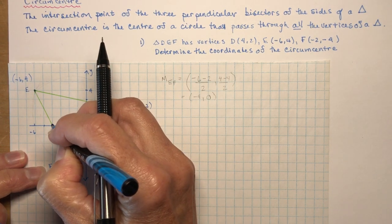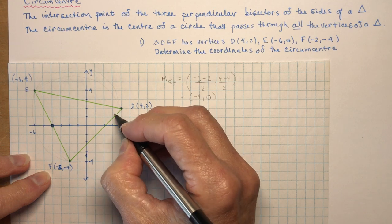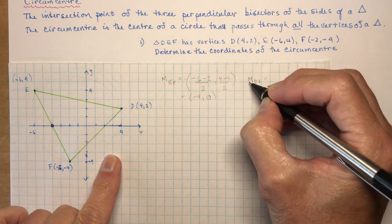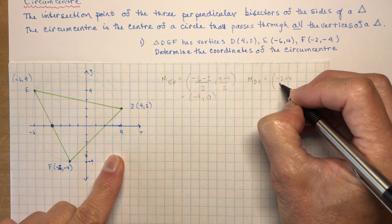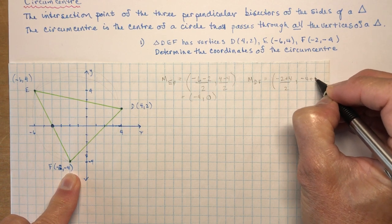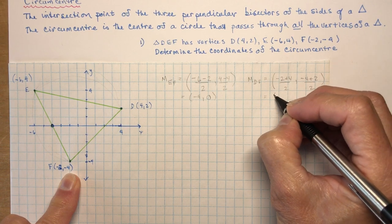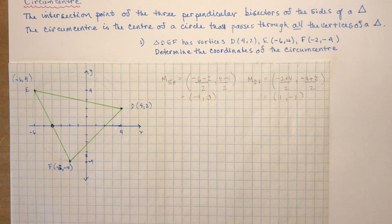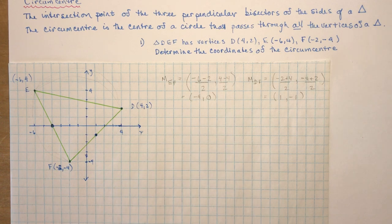Now let's find the midpoint of DF. We add the x's: (-2 + 4) / 2, and the y's: (-4 + 2) / 2. That gives us 2/2 = 1 for x and -2/2 = -1 for y, so the midpoint of DF is (1, -1). Now I need to find the slopes so I can get the negative reciprocals and find the perpendicular bisector lines.